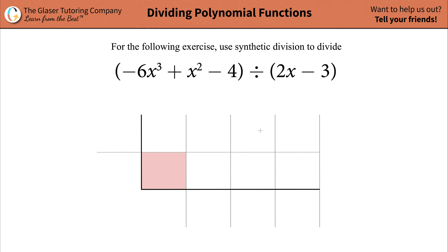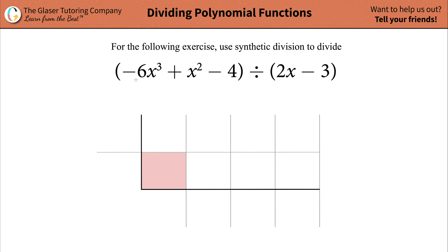The first step is we are going to set up a synthetic division table. In the top row of the table, we're going to place the coefficients of our dividend. Now notice there's something unique about this dividend — it goes x cubed, x squared, but it looks like we're missing the x term.